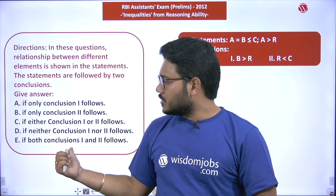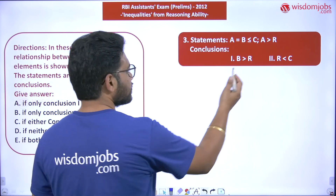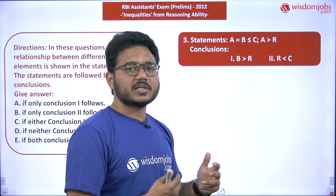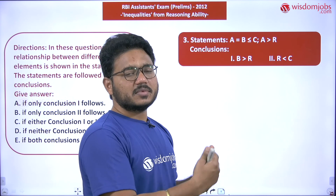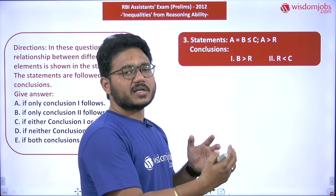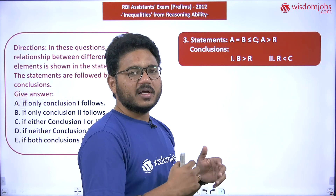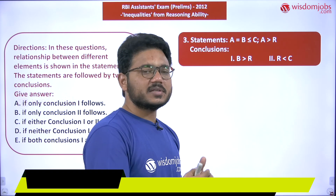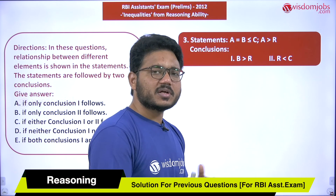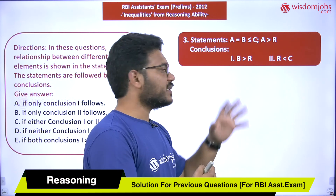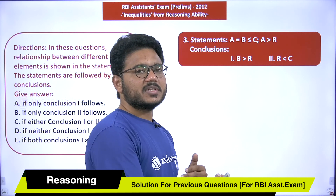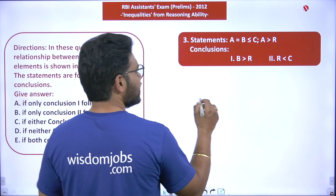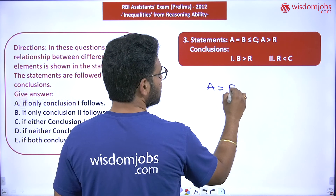The first thing we need to check is whether the statements are given in a single line or as a group. Our aim is to arrange them into a single line, or if that is not possible, rearrange them so that a path can be established between the elements used in the conclusions. The relationship between those elements must be traceable through the rearranged statements.